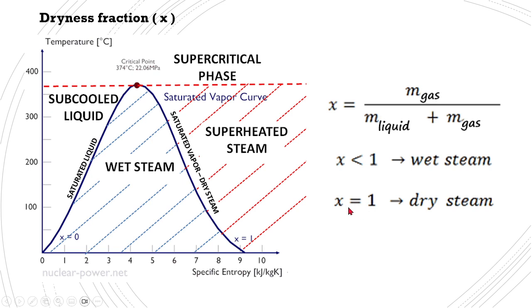If the dryness fraction is one, then we call it dry steam — there won't be any liquid molecules. If the dryness fraction is less than one, that means it is saturated wet steam, which means it has liquid molecules present.